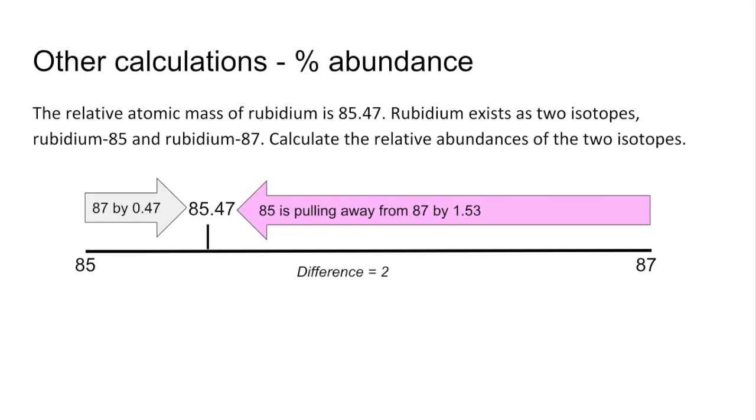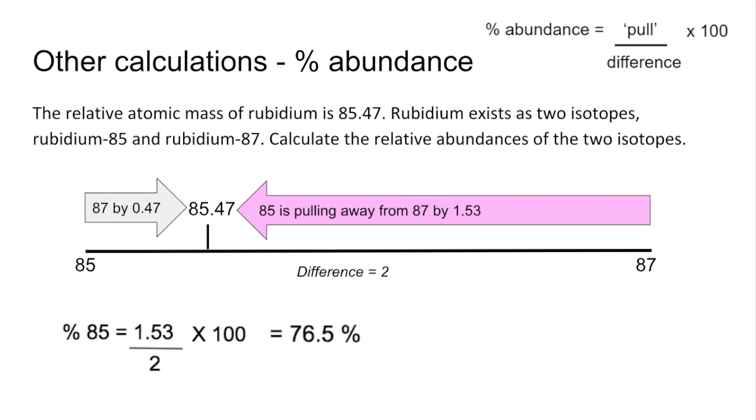And the formula I use for this is the percentage abundance is the pull of the isotope divided by the difference multiplied by 100. So the percentage for the 85 isotope is its pull, 1.53, divided by the difference of 2 multiplied by 100, 76.5%. And the other one's obviously 23.5%, but there's the calculation for it.